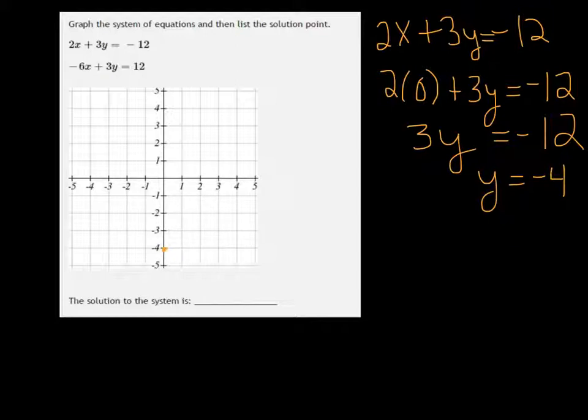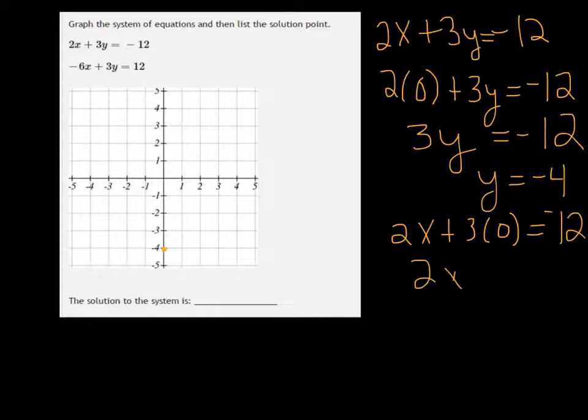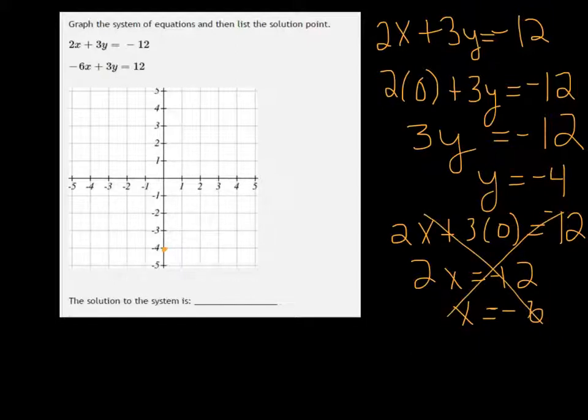And if I plug 0 in for y... or x, yeah y, that's right, we already did x. I get 2x equals negative 12, so x is negative 6. Well, that's no good because it doesn't fit on our graph. So we want to pick a different point that's going to work here.